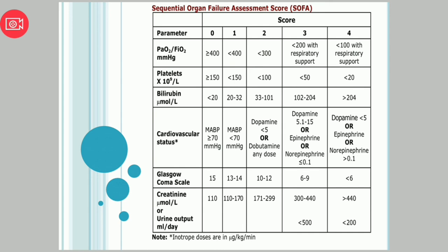For cardiovascular status: mean arterial blood pressure more than 70 mmHg, score is 0. MAP less than 70, score is 1. If we start inotropes such as dopamine, epinephrine (adrenaline), or norepinephrine (noradrenaline), the score increases accordingly based on the dose required.